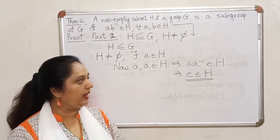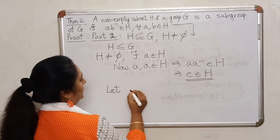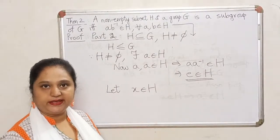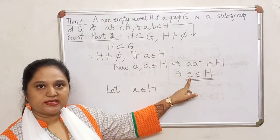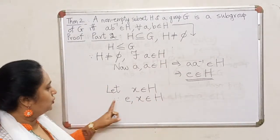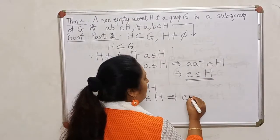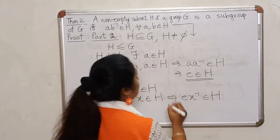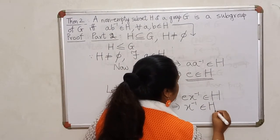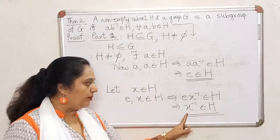Now we are left with closure and inverse properties. Let me address inverse property first. Take any element x in H. My aim is to prove that x inverse is also inside H. We have already proved that the identity is inside H. So the identity as well as x lie inside H. Using our condition — first element times inverse of the second — we get identity times x inverse, which lies inside H. Since identity times any element is that element, x inverse lies inside H. So for every element in H, the inverse is there.